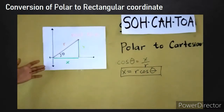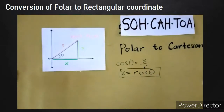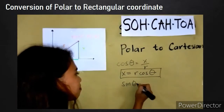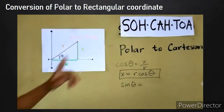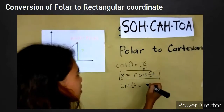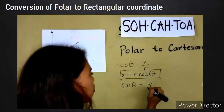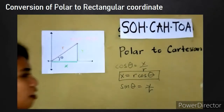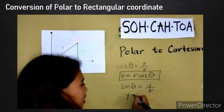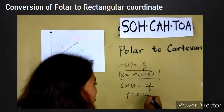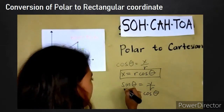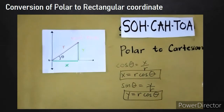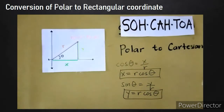While in finding the y coordinate, we need to use the sine. sinθ is equal to opposite over hypotenuse, which is y over r. Then we derive the formula: y is equal to r sinθ. This is the formula in converting polar coordinates to Cartesian coordinates.